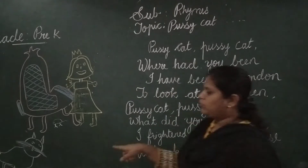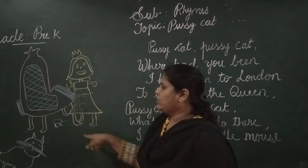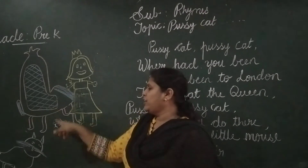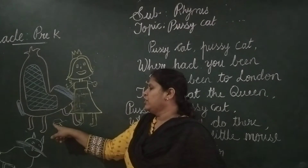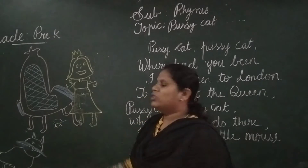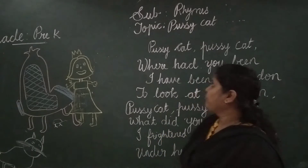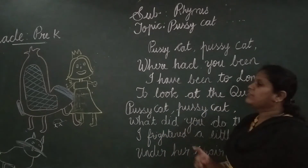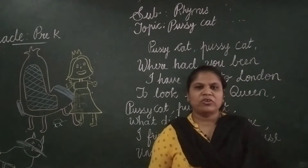See, here is the pussycat. This is the chair where there is a rat — or mouse — under the chair. We will sing these rhymes. Let's say these rhymes.